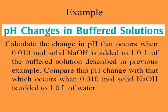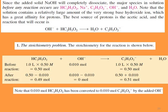Now let's look at another example: finding the pH change in a buffered solution. We calculate the change in pH when 0.01 mol solid NaOH is added to one liter of the previous buffered solution, and compare this with adding 0.01 mol NaOH to one liter of water. Since NaOH is a strong base, it completely dissociates into sodium ion and hydroxide ion.